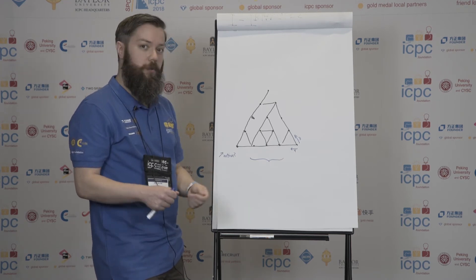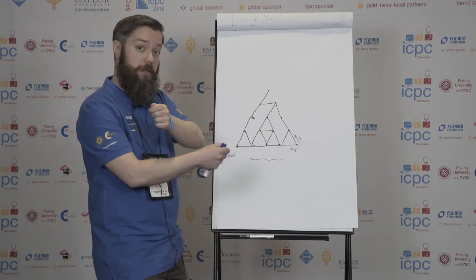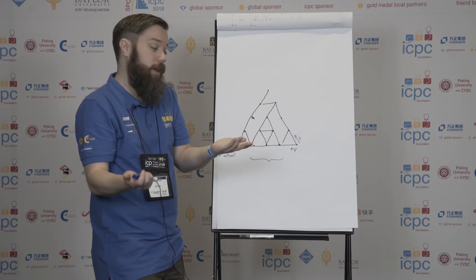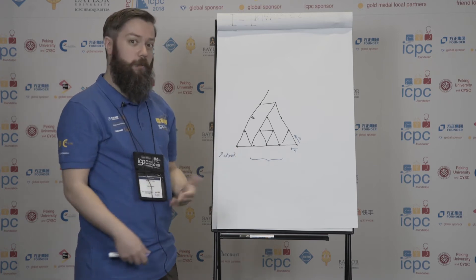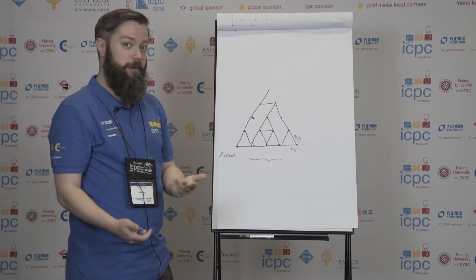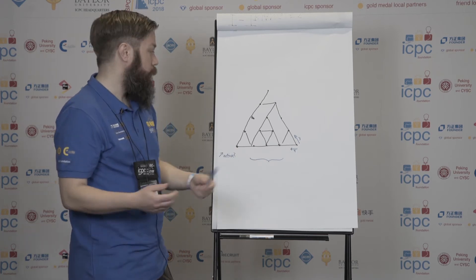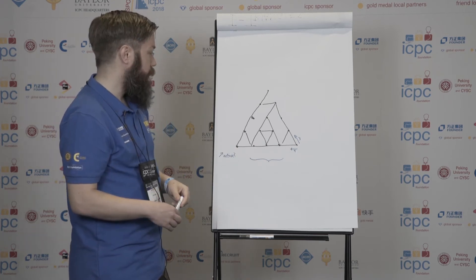For now we're only counting upwards-pointing triangles. To count downwards-pointing triangles, all we do is turn the picture upside down, so the downward ones become upward-pointing, and we just do the same thing.